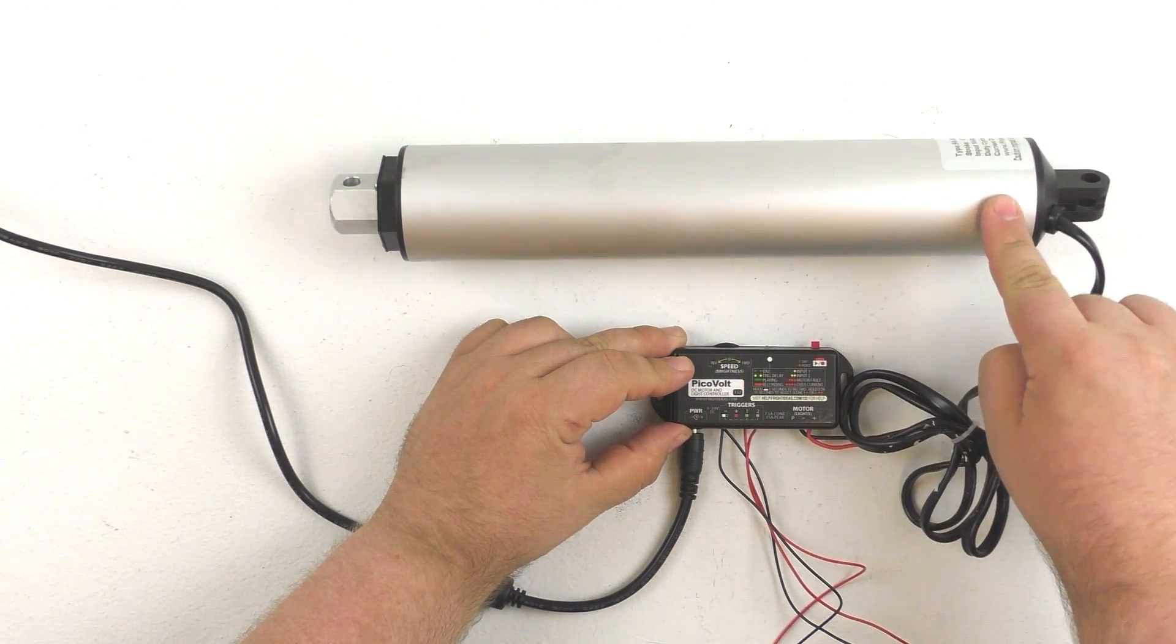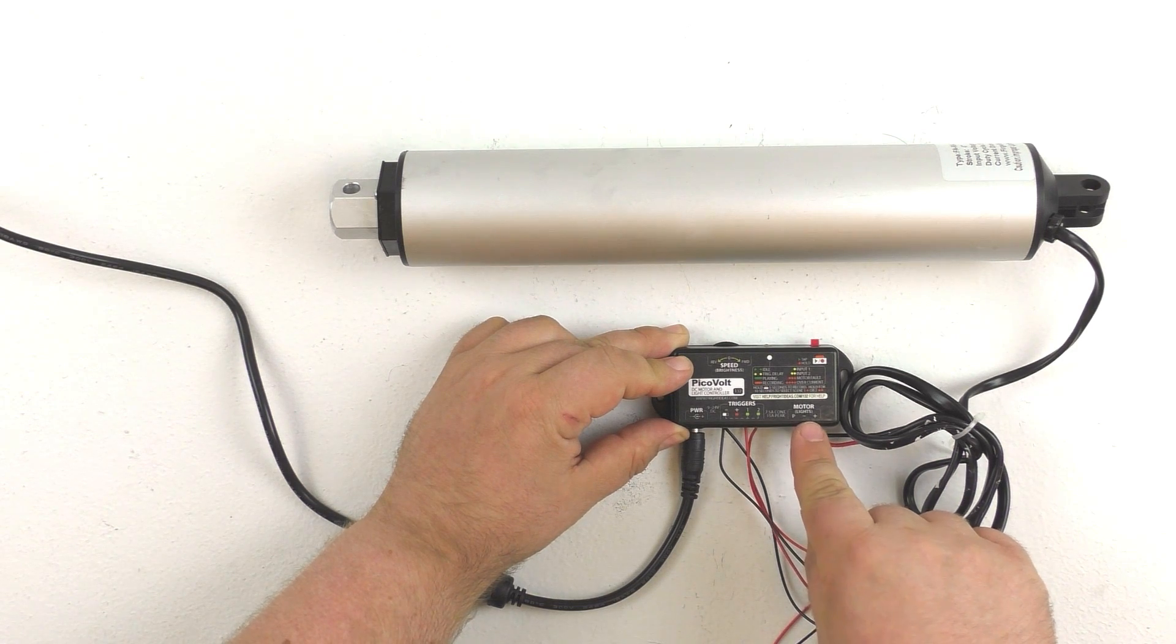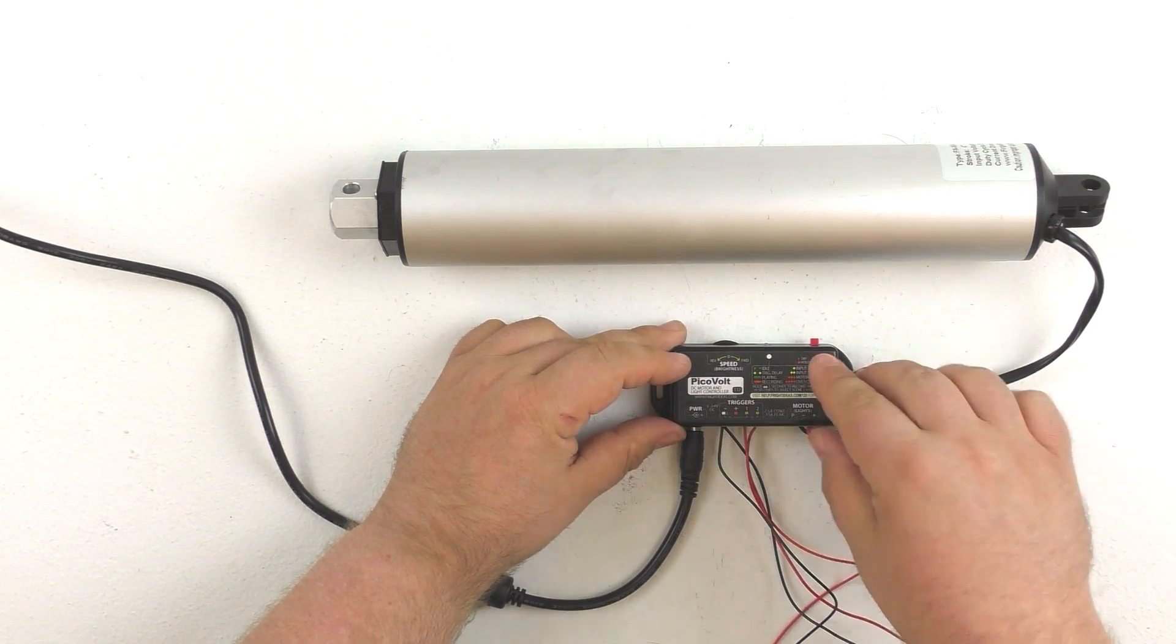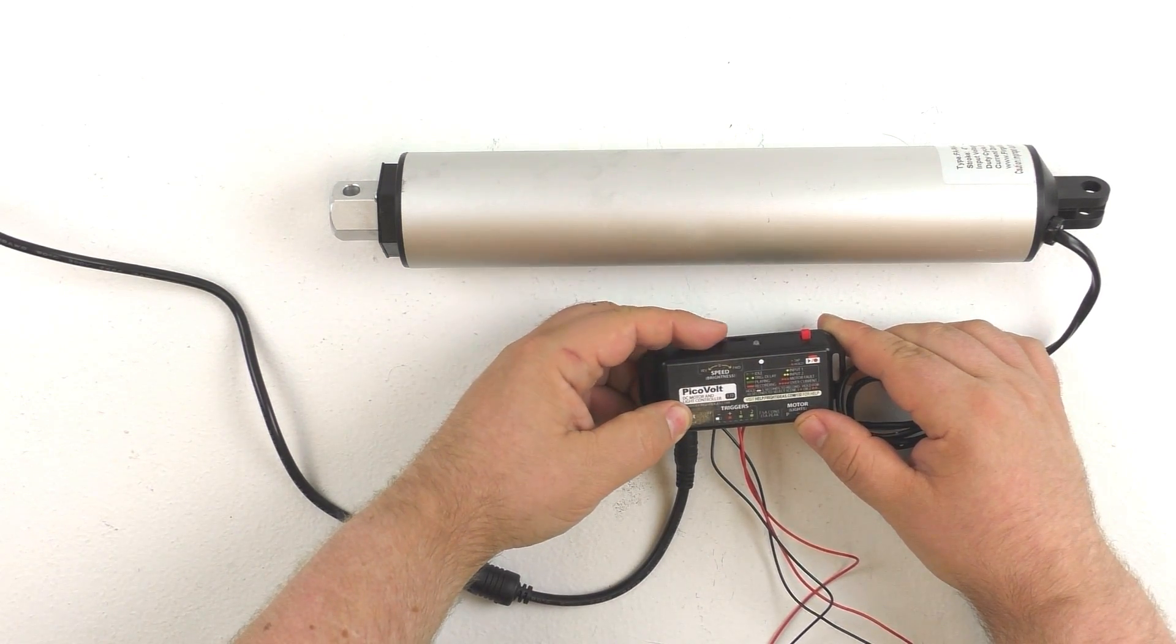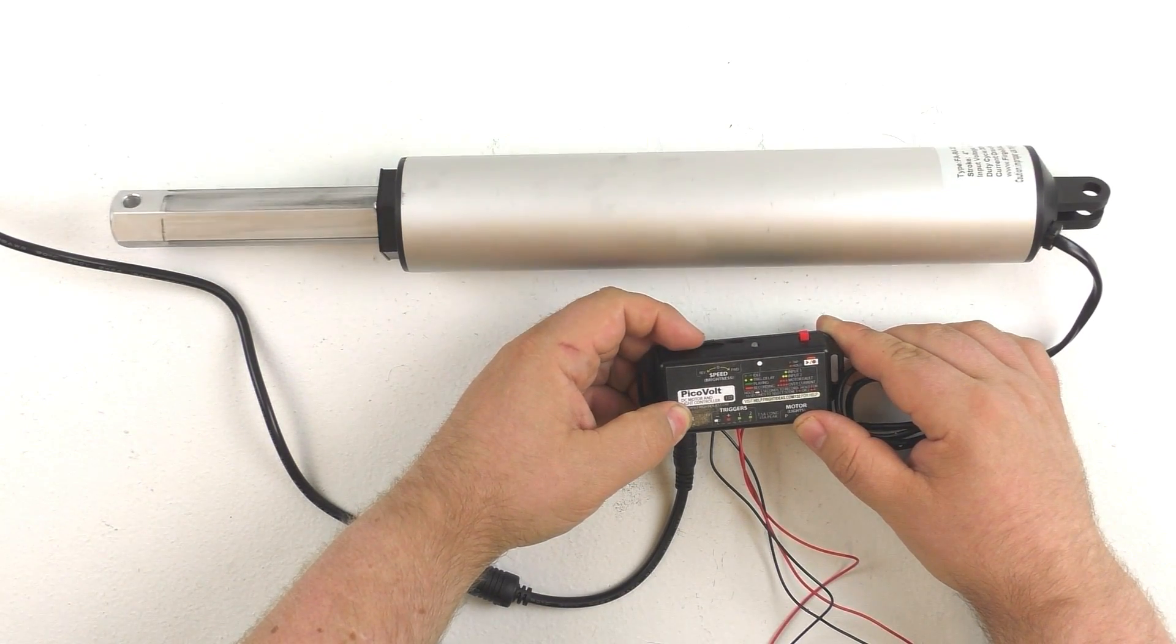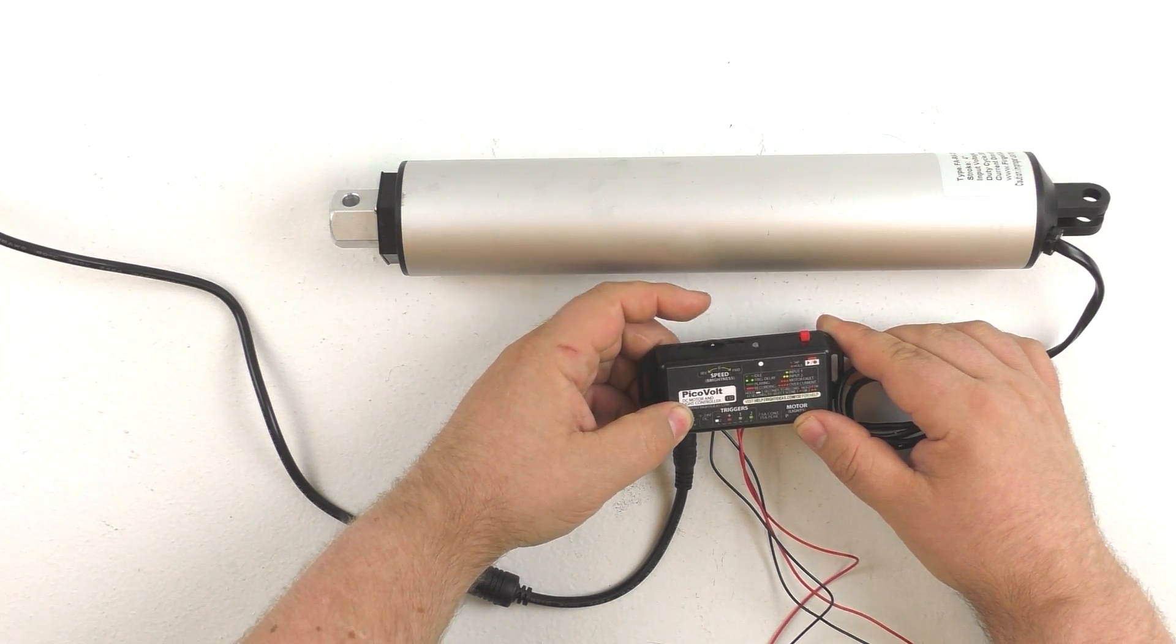So you can see that I have my linear actuator here wired into the PicoVolt just into the negative and positive terminals here under motor and if I adjust the dial on the top of the unit we can actually extend and retract the actuator.